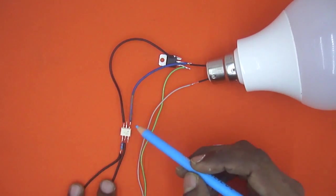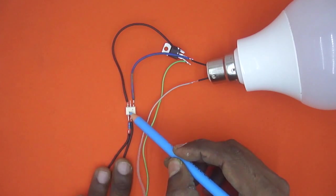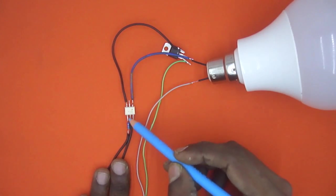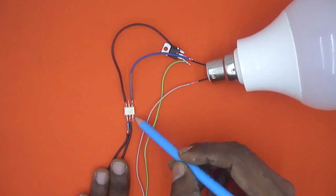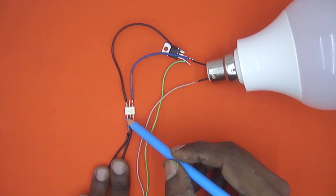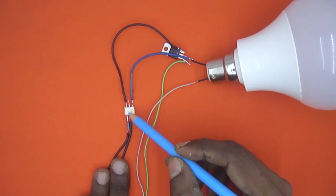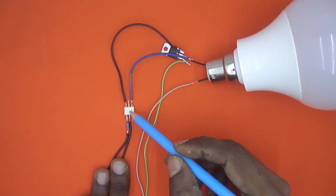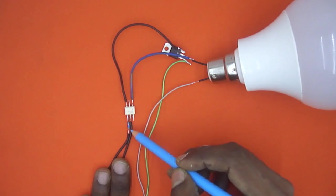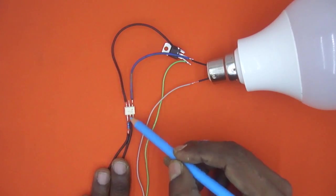Now here we are using opto isolator. This is a 6 pin opto isolator. In this opto isolator pin number 1 is actually positive supply for the light emitting diode LED inside this. Pin number 2 is the negative terminal of LED.